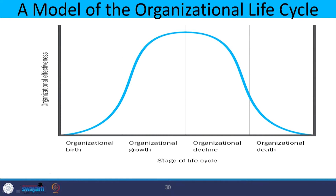A model of organizational life cycle plots life cycle stages on one axis and organizational effectiveness on the other axis, showing that the organization moves through various ebbs and flows. In the birth, growth, decline, and death stages there are different challenges. The birth stage is the founding of an organization when it is just beginning to take baby steps in the market.